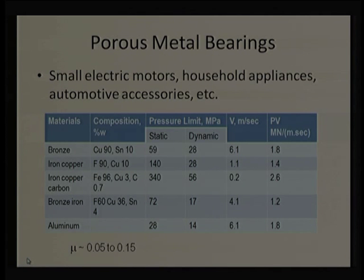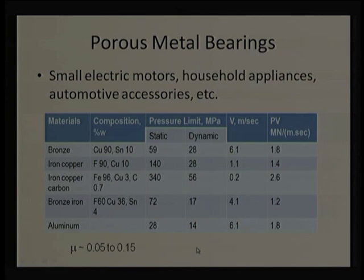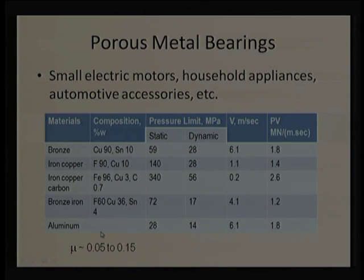There are two pressure limit columns — static and dynamic. Under dynamic load, the permissible limit is reduced because oil does not get sufficient time to move in and out of the pores. The dynamic permissible limit is about 50% of the static limit. Compared to dry bearings, the coefficient of friction is lesser due to lubricant supply, giving a range of 0.05 to 0.15.